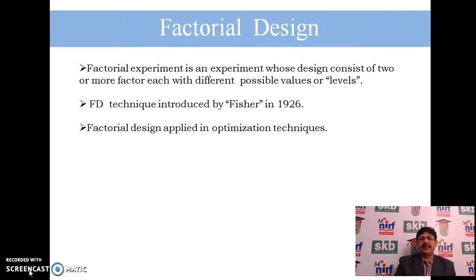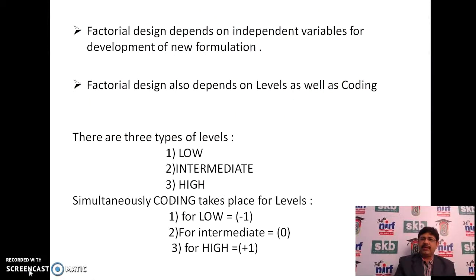Factorial design is an experiment whose design consists of two or more factors, each with different possible values or levels. This was introduced by Fisher in 1926. Factorial design is applied in optimization techniques, depending on independent variables for development of new formulations, and also depending on the level and coding — for example, low, intermediate, and high coded as −1, 0, and +1 respectively. This concludes the basics of optimization. Hope you have understood, and thank you so much.